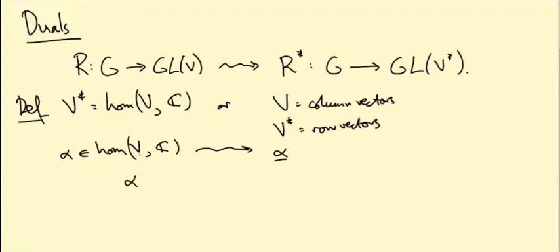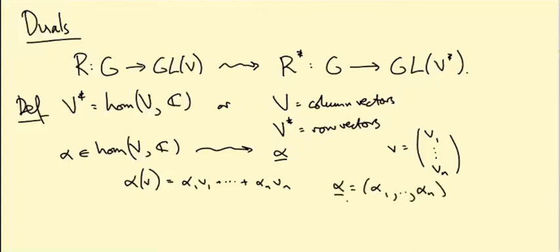So first of all let's pick a basis of V and think of elements as column vectors V1 down to Vn. Well then alpha of V is just going to be something of the form alpha_1 V_1 plus dot dot dot plus alpha_n V_n. So if we define alpha underline to be the row vector alpha_1 up to alpha_n, this is precisely alpha underline matrix multiplied into the vector V.